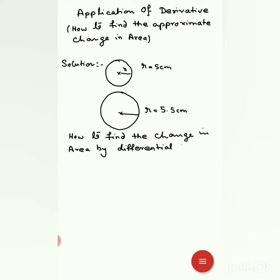We know the area of a circle. The area of a circle is A equals π r square. Now, as we know the area of a circle is π r square, let us differentiate this equation. When I differentiate this equation,